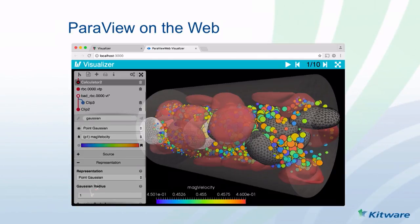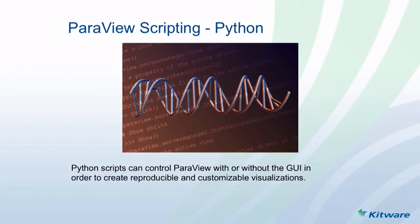ParaView runs on the web as well. In this scenario, you have your visualization running in the browser — it looks more or less like ParaView on the desktop — and it connects to a server that actually produces the visualization. You can also drive the visualization using Python. Everything you can do in the desktop application can be driven with Python in two ways: you can build your entire interface and pipeline in Python, or you can write a Python script that does custom processing and include that algorithm in your visualization pipeline.